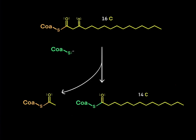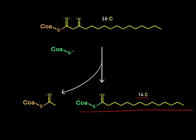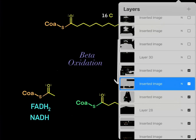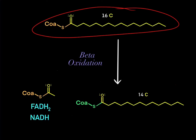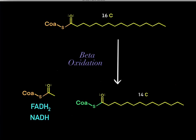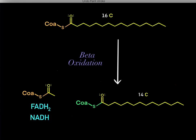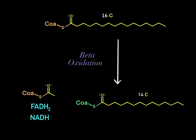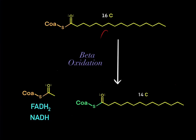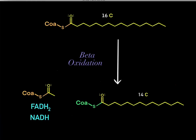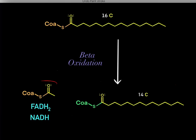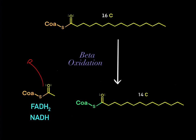We have now completed one round of beta-oxidation. Starting from a 16-carbon acyl-CoA, we produce a 14-carbon acyl-CoA, one FADH2, one NADH, and one acetyl-CoA. The reduced cofactors fuel the electron transport chain, and the acetyl-CoA can enter other metabolic processes. Since we now have a 14-carbon acyl-CoA, we can immediately do another round of beta-oxidation.